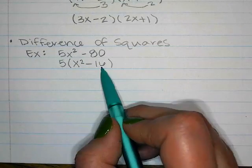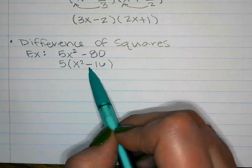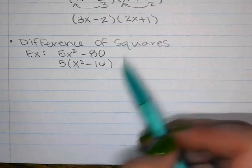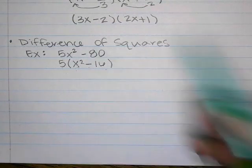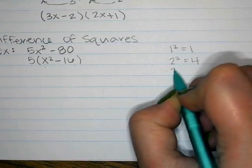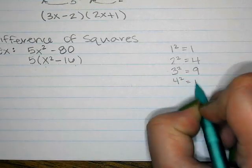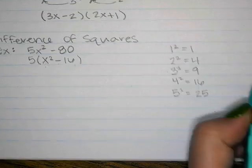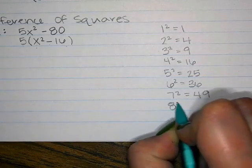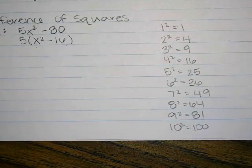Difference of squares means you have a minus in the middle — that's what 'difference' means in math — and both terms are perfect squares. x squared is a perfect square. 16 is also a perfect square: 4 squared is 16. Your perfect squares to recognize: 1, 4, 9, 16, 25, 36 — it's good to know these up to 100.